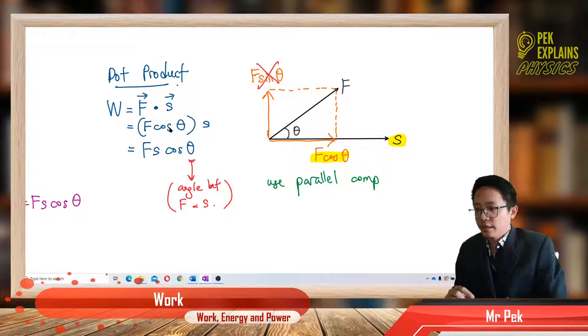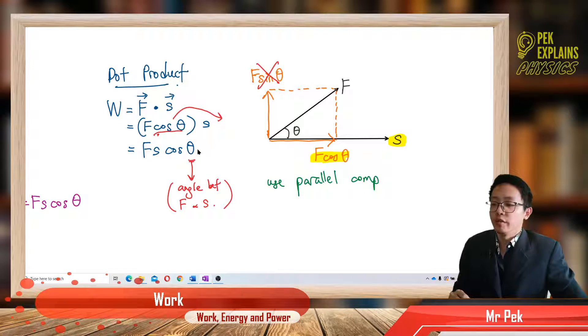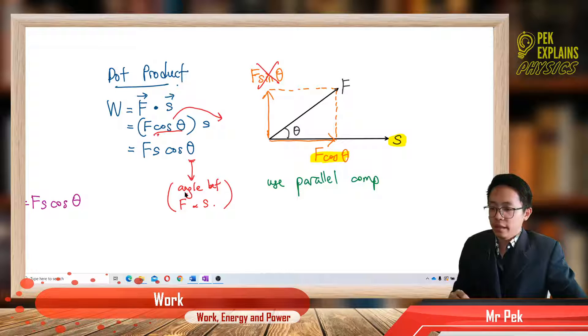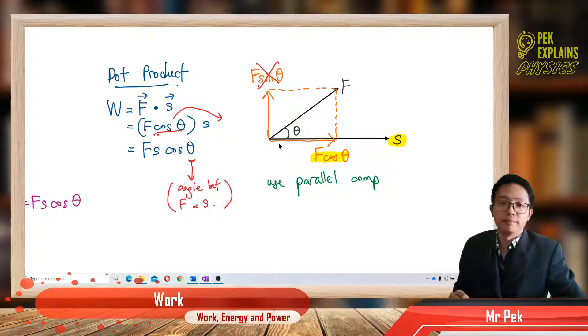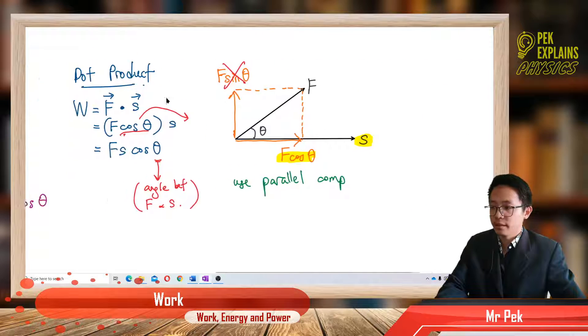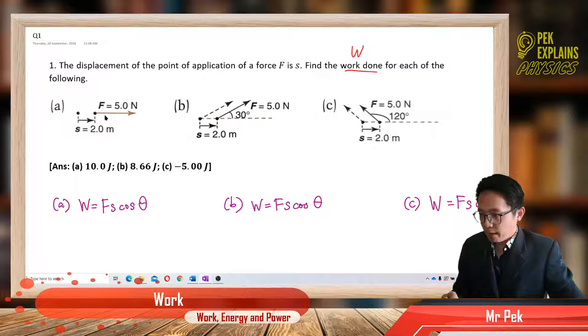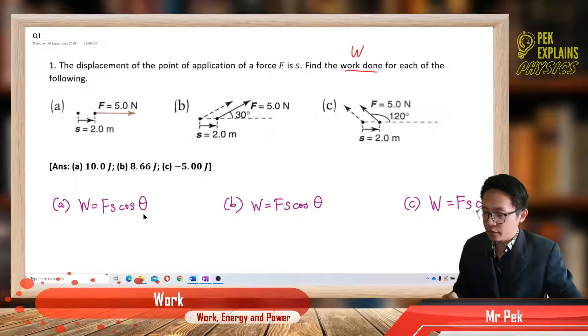F cos theta can be transferred to the back. That's why we have F S cos theta, with the angle theta being the angle between force and displacement. So work done is F times S cos angle between them. That is dot product.